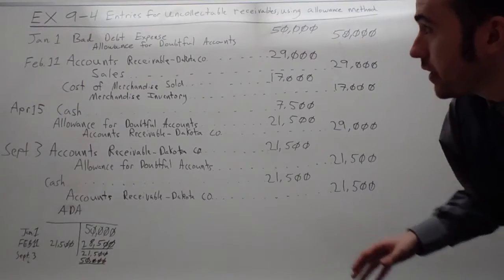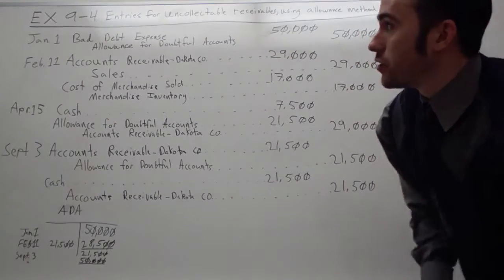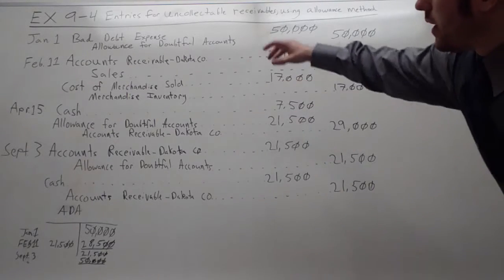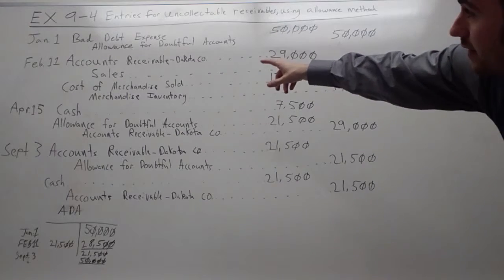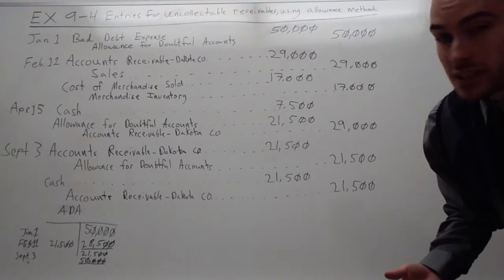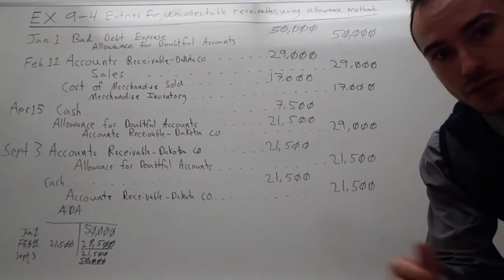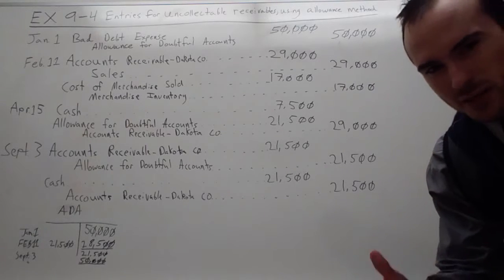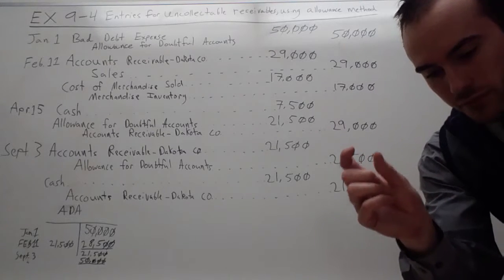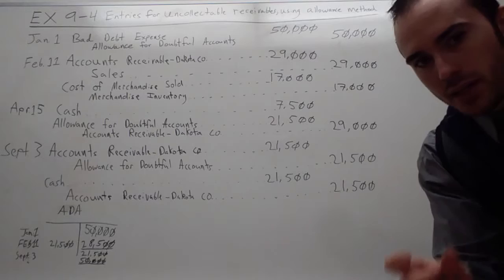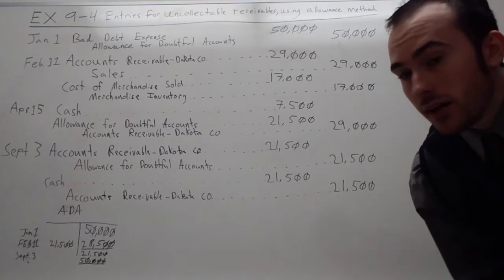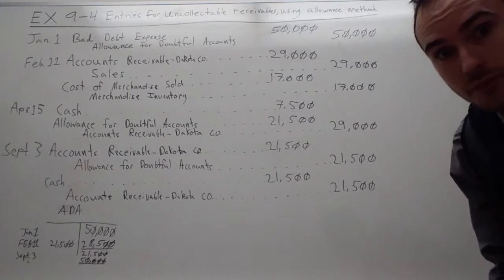And I added one extra entry up at the top here for January 1st, just to show you how you create an allowance for doubtful accounts. I debited bad debt expense for $50,000 and credited allowance for doubtful accounts for $50,000. This is usually done at the beginning of the year after you've aged your receivables and you find out your estimate of how much you're not going to collect. To age your receivable, you just take each receivable that's due in a different time period, times it by a percentage that gets higher and higher as it gets older, and that's what you think you're not going to get. Then you just add it up and that should be your entry.